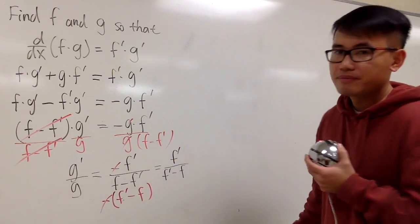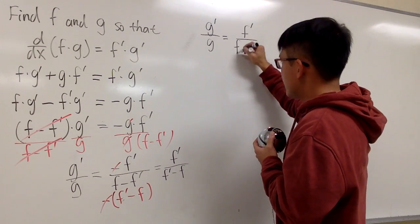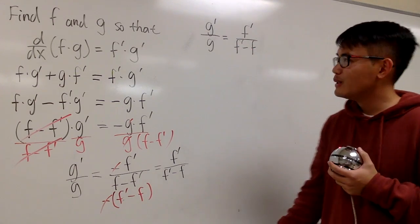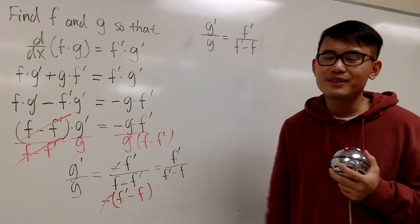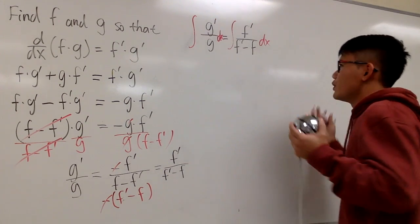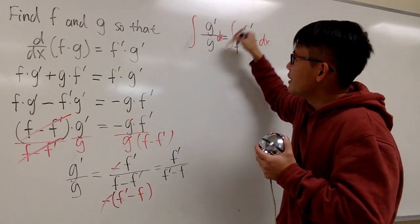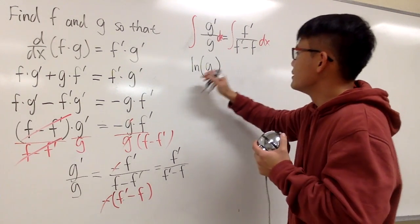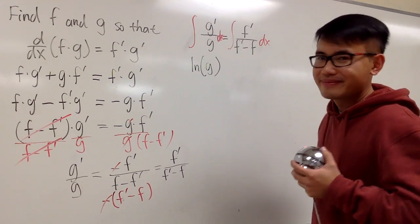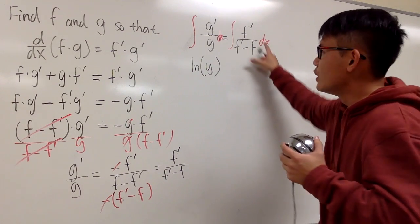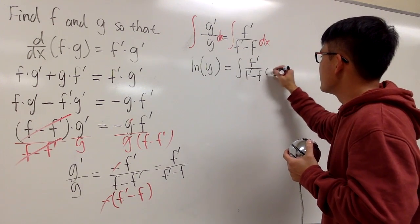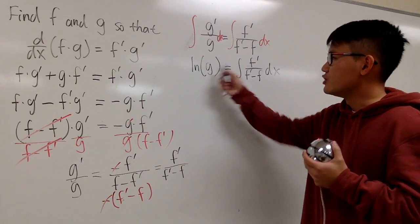So we have g prime over g equal to f prime over (f prime minus f). On the left hand side, the function is in the denominator and its derivative is on top — that is the derivative of a natural log function. So we can integrate both sides with respect to x. The left hand side gives us the natural log of g(x).